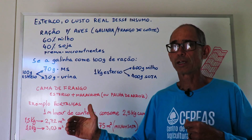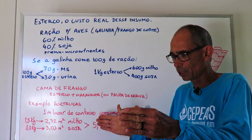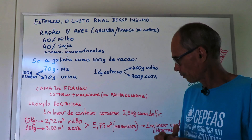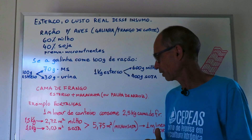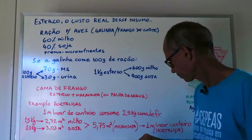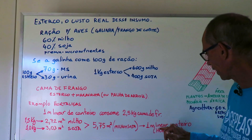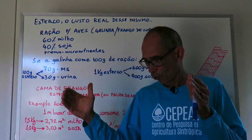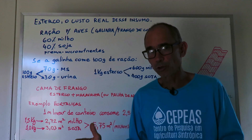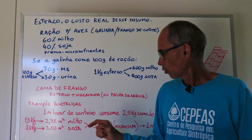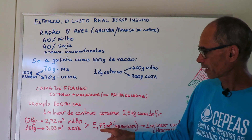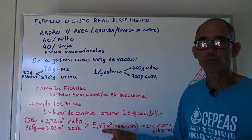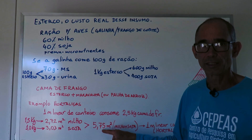I'm not saying 1 m², because sometimes the bed has less than 1 m². But let's imagine it would be 1 m². What does that mean? For each 1 m² of a vegetable bed, we will need to have planted 5.7 m² of corn and soy to supply the manure used.